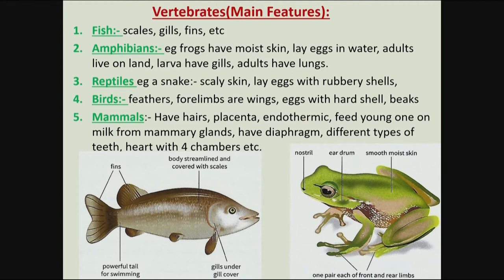Then we have reptiles, like snakes and crocodiles. These ones normally have dry, scaly skin. The kind of eggs they lay have rubbery shells — they're a bit soft and rubbery, not hard shells like in the case of birds.